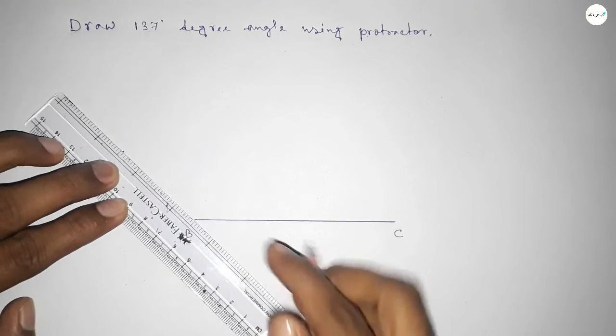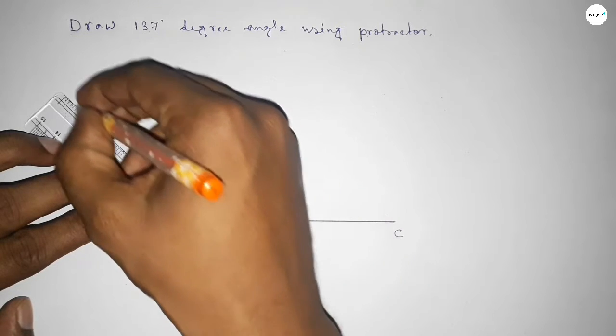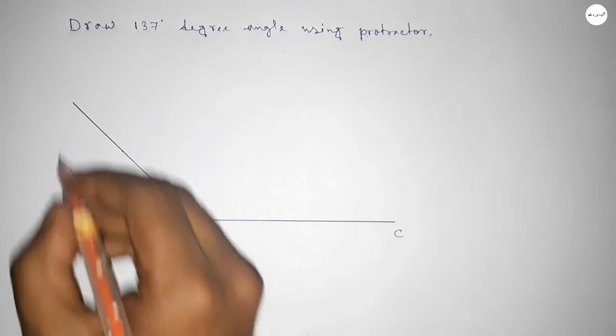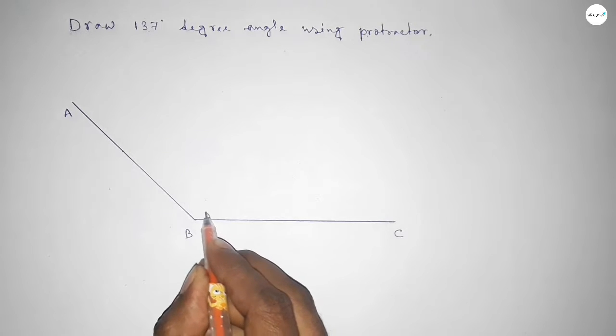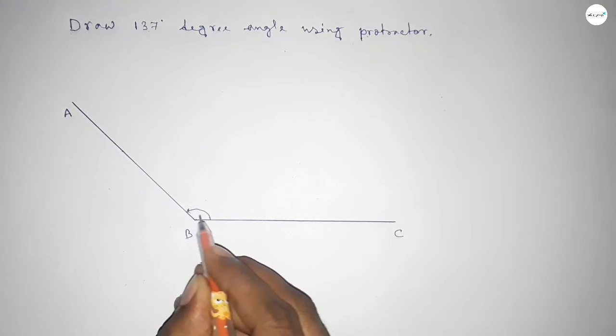Now joining this side to get 137 degree angle. So taking here a point. So angle ABC up to this, this is 137 degree angle.